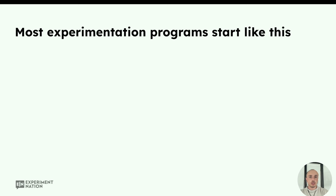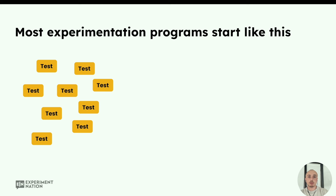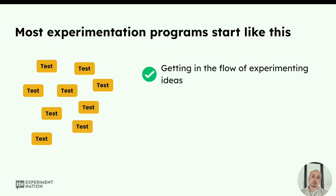What I often see when experimentation programs start is they start like this: they have an idea within the organization, it comes from someone within the team or outside of the team, they write a hypothesis, they do the test, they get the results back, and then someone else has an idea, they write another hypothesis, do another analysis, and they keep going like this for a while. They do multiple tests, multiple directions, multiple ideas. Of course, this is a good way to start because they're getting in the flow of experimentation, writing hypotheses, and trying out new stuff, going towards a validation way of working.